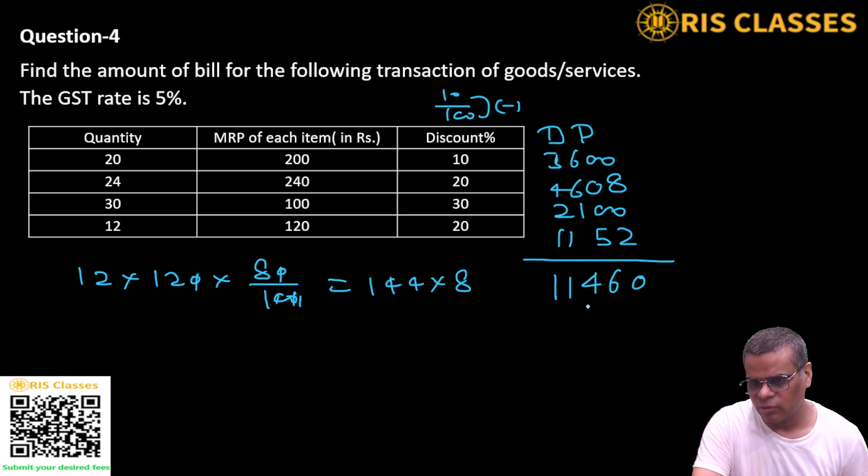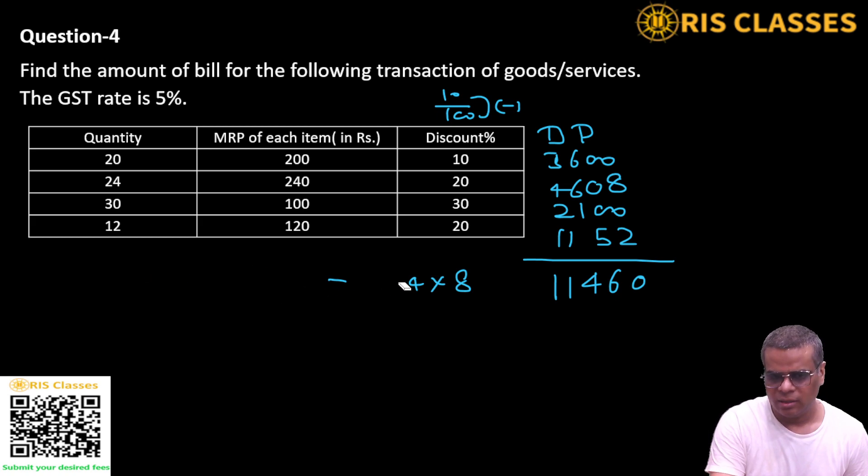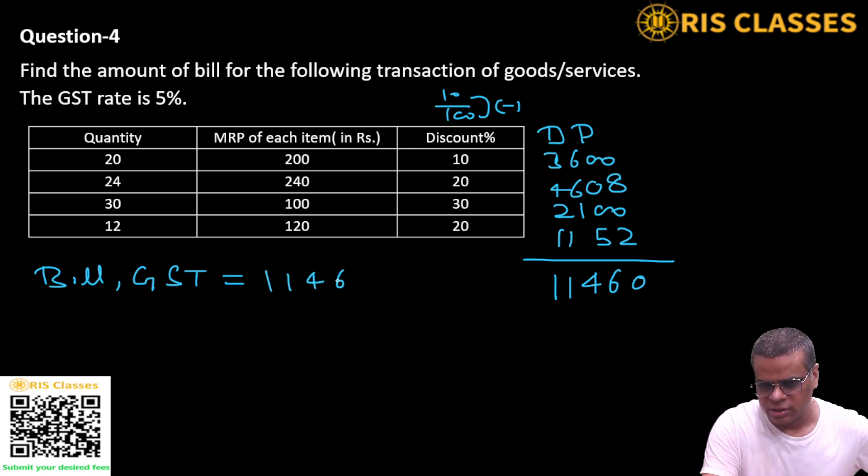The total discounted amount is 11,460. Now including GST. Let me write 11460. GST is 5%, 5% is what? 1 by 20, fraction value is 1 by 20. GST will be added. Part value will be added in base value, 20 plus 1 is 21 by 20.